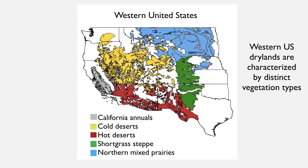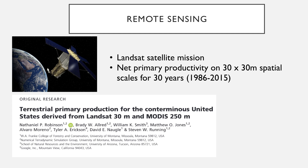To answer this question, I utilize the western United States dryland region. This region is a great natural laboratory because it contains distinct vegetation types that dominate throughout, all of which are water-limited systems. We get a diverse set of vegetation structures ranging from California annuals, to shrub-dominated cold deserts, to hot deserts, to the short grass steppe, to northern mixed grass prairies. However, if we want to see how these patterns compare within vegetation types, we need extensive datasets — and to date we haven't had that with plot-level clipping data.